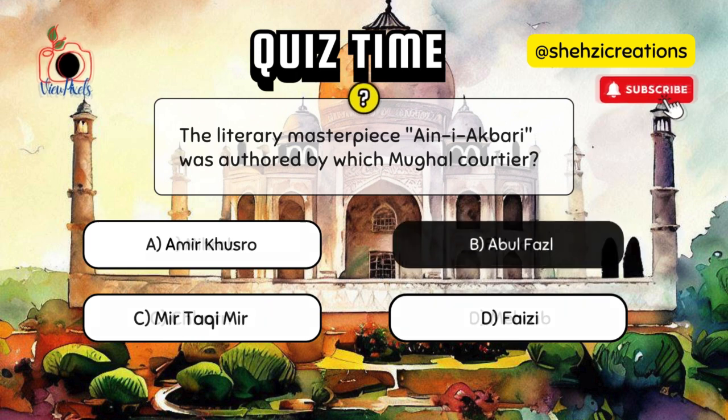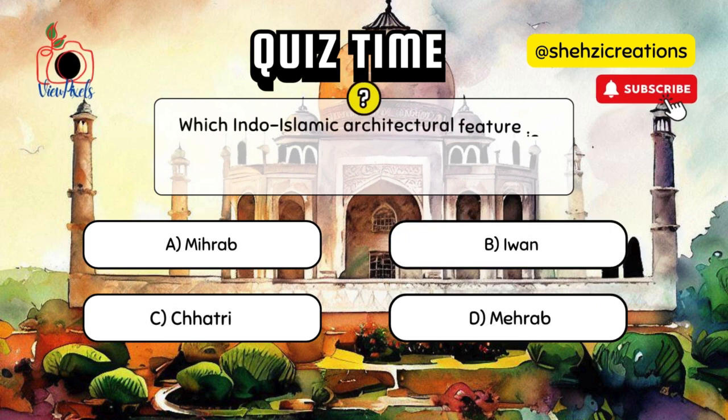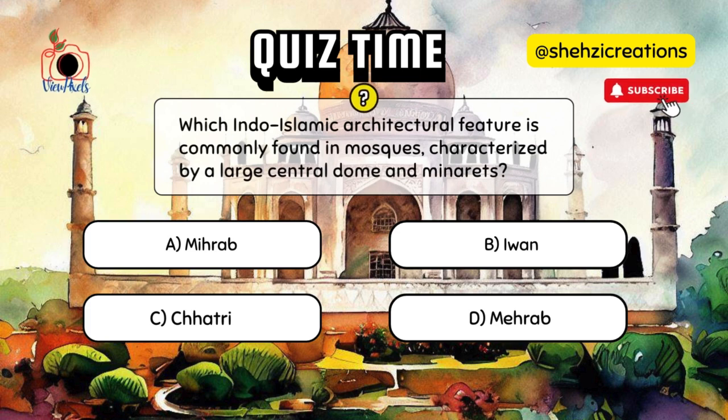Which Indo-Islamic architectural feature is commonly found in mosques, characterized by a large central dome and minarets?